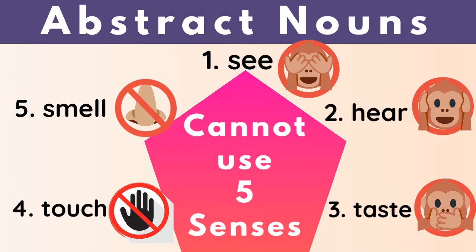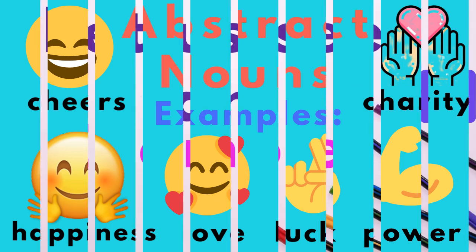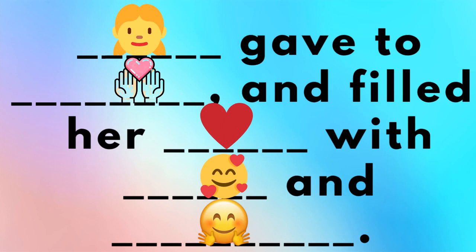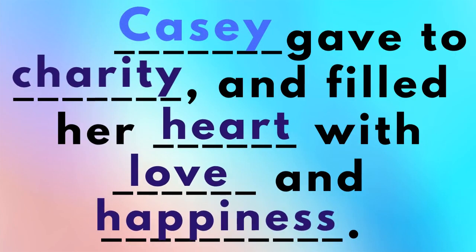Abstract nouns. Abstract nouns you cannot see, you cannot hear, you cannot taste, you cannot touch, and you cannot smell. You cannot use your five senses. Here are some examples: cheers, happiness, love, luck, power, charity. Casey gave to charity and filled her heart with love and happiness.